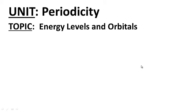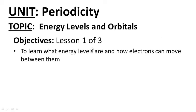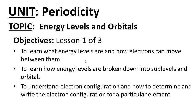Welcome to our unit on periodicity. Your topic is energy levels and orbitals, lesson one of three. Your objectives are as follows: to learn what energy levels are and how electrons can move between them; to learn how energy levels are broken down into sub-levels and orbitals; and to understand electron configuration and how to determine and write the electron configuration for a particular element.